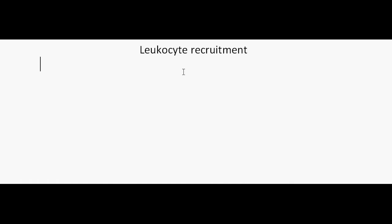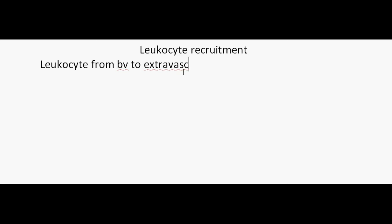The movement of leukocytes from the blood vessels towards the extravascular space is called leukocyte recruitment. To understand the mechanism, we need to know four different stages through which the leukocyte is brought from the blood vessel to the extracellular matrix.